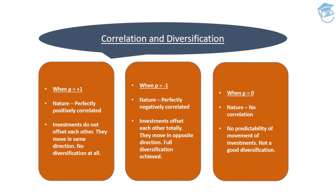When correlation is +1 and both securities move in the same direction — either both going up or both going down — diversification cannot be done at all. There is no point switching from one to another since both move together. When the correlation is negative one, meaning perfectly negatively correlated, investments offset each other completely — one goes up, the other goes down. Full diversification is possible and can be achieved when the correlation is negative one.